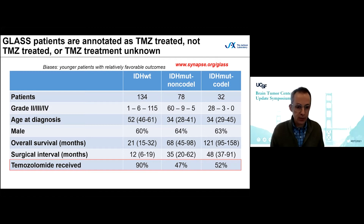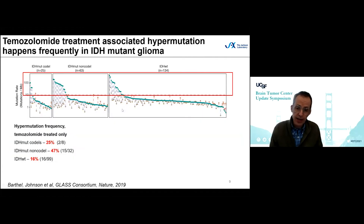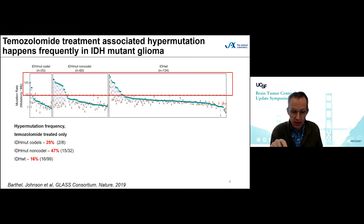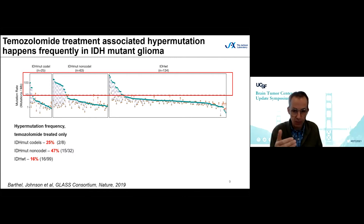Another aspect of clinical data we have is whether patients received temozolomide between their tumor occurrences. The vast majority of IDH wild-type patients received temozolomide, and nearly half of the IDH mutants also received it. We see a high hypermutation subgroup in each of the three molecular subtypes — the mutation frequency at diagnosis versus recurrence clearly shows this — and the frequencies are comparable to what others have reported, with perhaps an exception in the small IDH mutant codel group due to sampling bias.